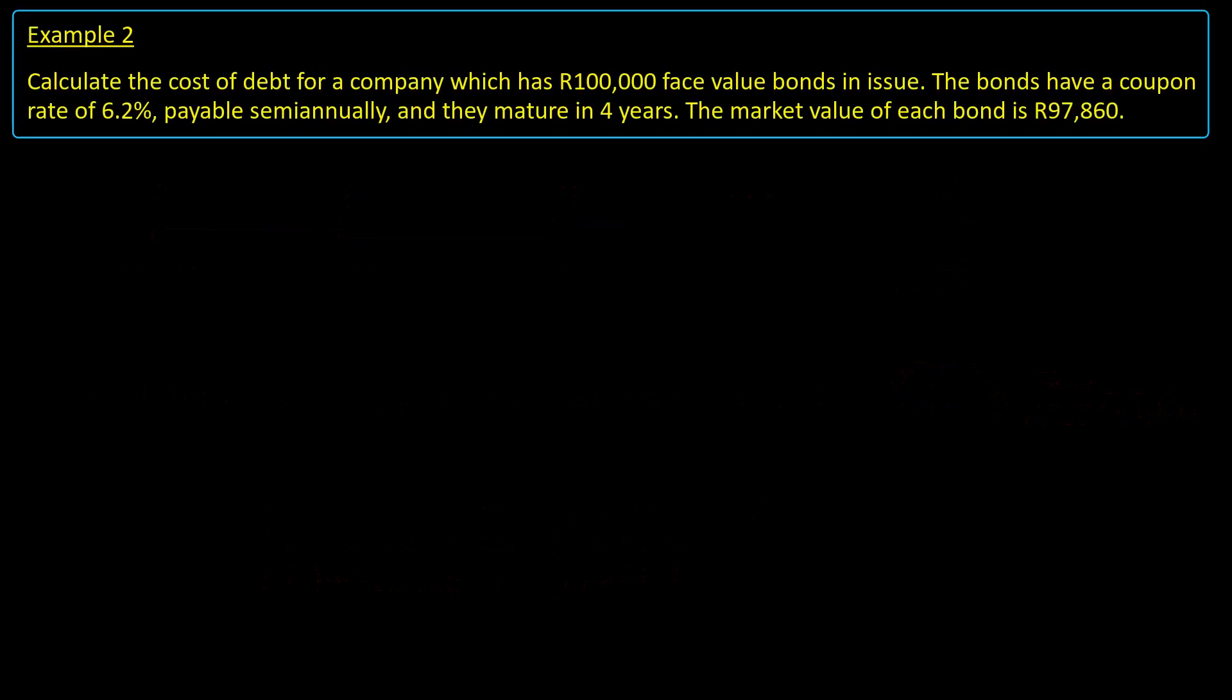In the next and final example for this video, let's take a look at a slightly more complex situation. This time, the bond has a 100,000 Rand face value, a coupon rate of 6.2% and a maturity of 4 years. The market value is 97,860 Rand and the coupons are paid semi-annually.